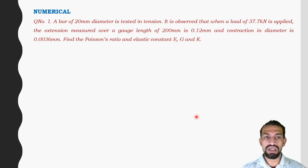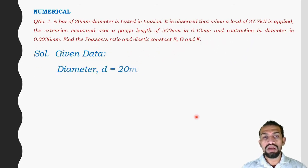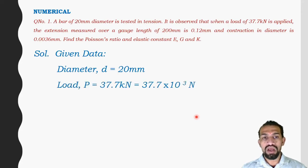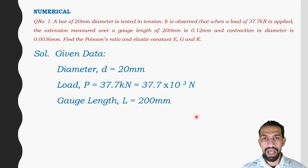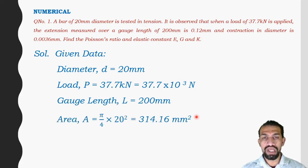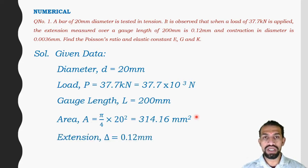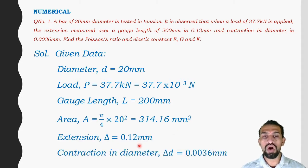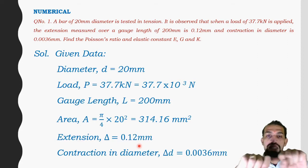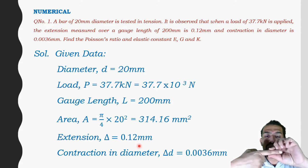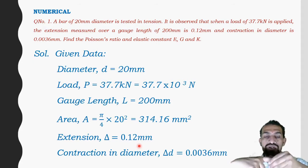Writing the given data: diameter = 20 mm, load = 37.7 × 10³ N, gauge length L = 200 mm, area = π/4 × 20² = 314.16 mm², extension δ = 0.12 mm, and contraction in diameter = 0.0036 mm.